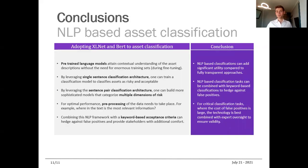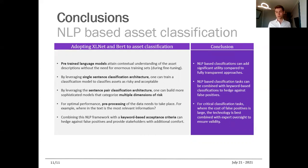Bringing this back to the conclusions: pre-trained language models attain a contextual understanding of asset descriptions without the need for enormous training sets during fine-tuning. We had two approaches: the first was single sentence classification, where we simply provide fund descriptions and train the model to classify them as either restricted or not. The slightly more advanced approach is to use a sentence pair classification architecture, providing the fund description and a descriptive sentence such as 'unlisted company exposure,' then gauging the similarity between them. By doing that with a number of sentences, we can attain multiple dimensions of risk for our evaluation.